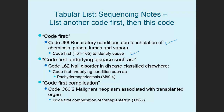You might also see 'code first underlying disease.' For example, L62, nail disorder in diseases classified elsewhere, has a note to code first the underlying condition with examples given — so the underlying condition is listed first and L62 second. You might also see 'code first complication.' Under C80.2, malignant neoplasm associated with transplanted organ, the note says code first the complication of transplantation under T86, then C80.2. So the transplant complication is listed first, and the malignant neoplasm second.